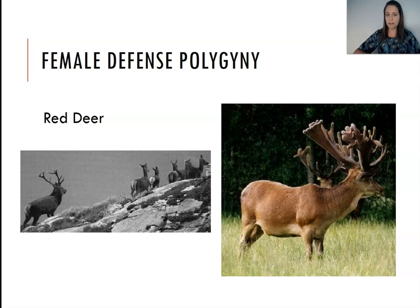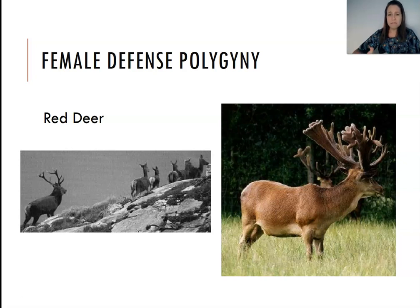The males are reproducing with as many females as they can. We also see an extreme amount of variation in paternity — some males have a lot of offspring and some have very few. Females are essentially reproducing at the maximum level that they are able to. So here we definitely see a polygynous mating system.